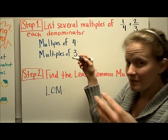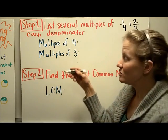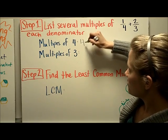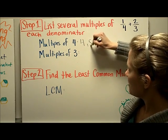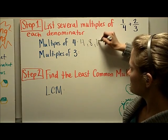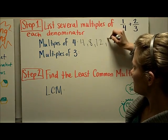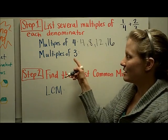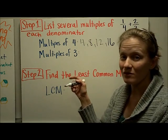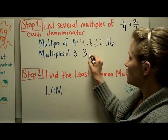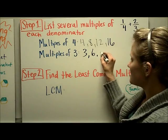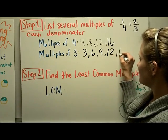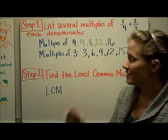Four times one is four, four times two is eight — you might use your song to help you. Four, eight, twelve, sixteen. We'll start with that many. Then I'm going to list the multiples of three: three, six, nine, twelve, fifteen. That's probably enough.